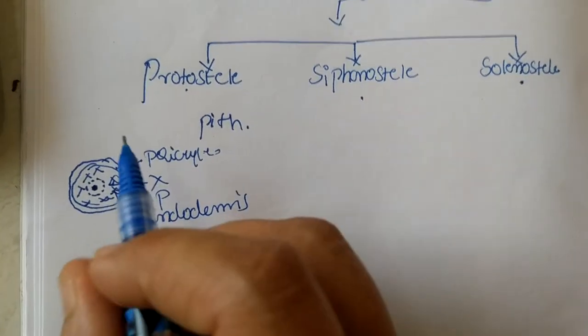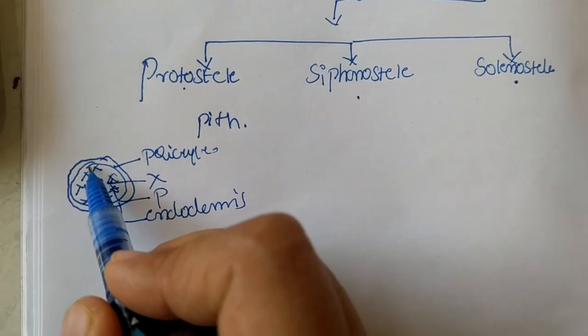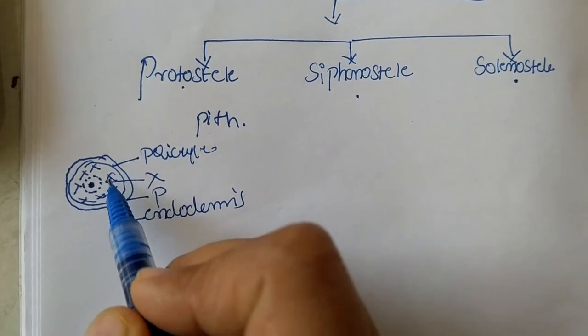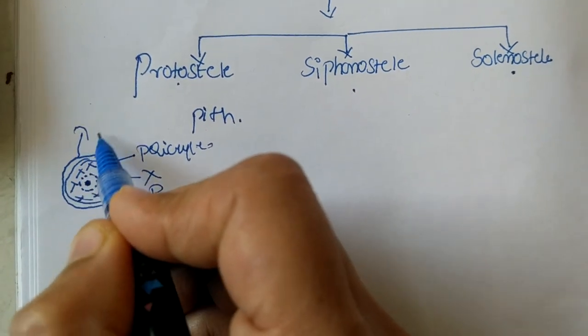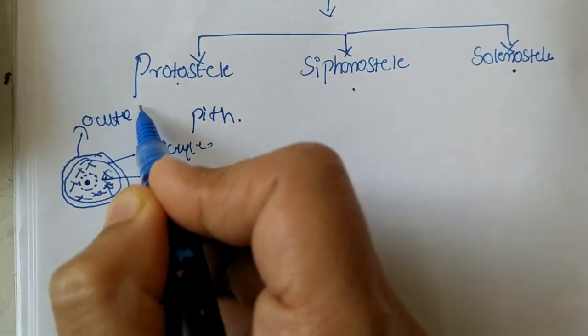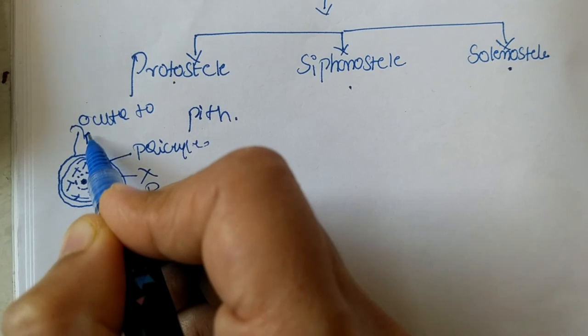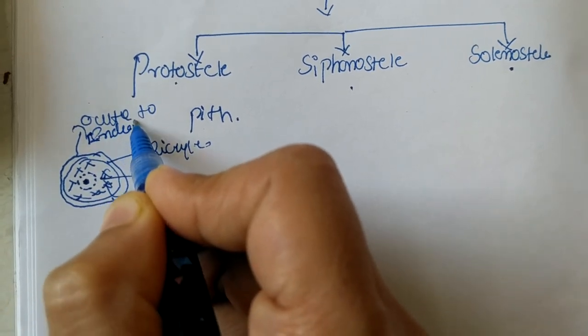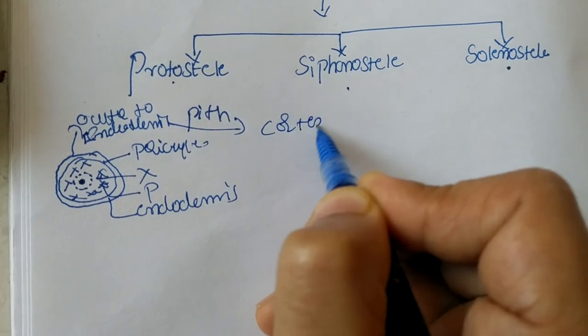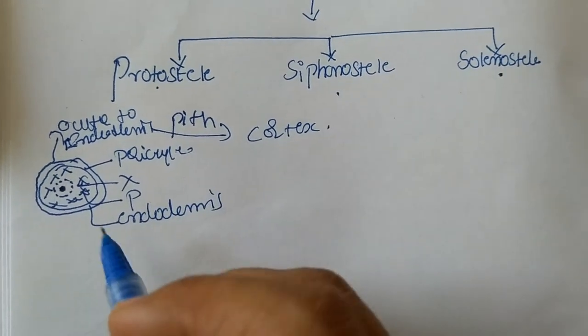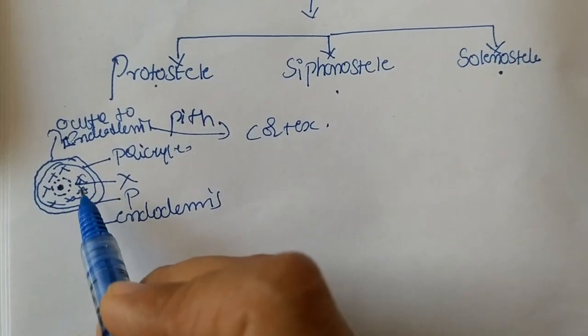This is the endodermis region which separates this entire central region, that is pericycle, xylem, phloem, pith, from the cortical region outer to this one. Outer to endodermis we have cortex. So this central portion is nothing but a steel.